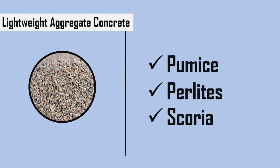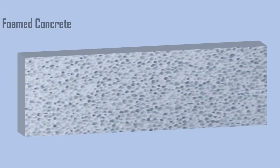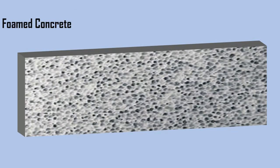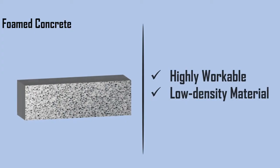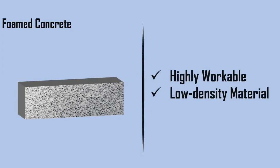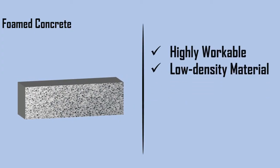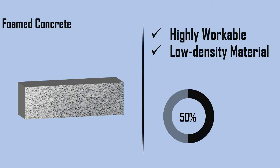Examples of lightweight aggregates are pumice, perlites, and scoria. Foamed concrete is formed by introducing large voids within the concrete. It is a highly workable, low density material which can incorporate up to 50 percent entrained air.